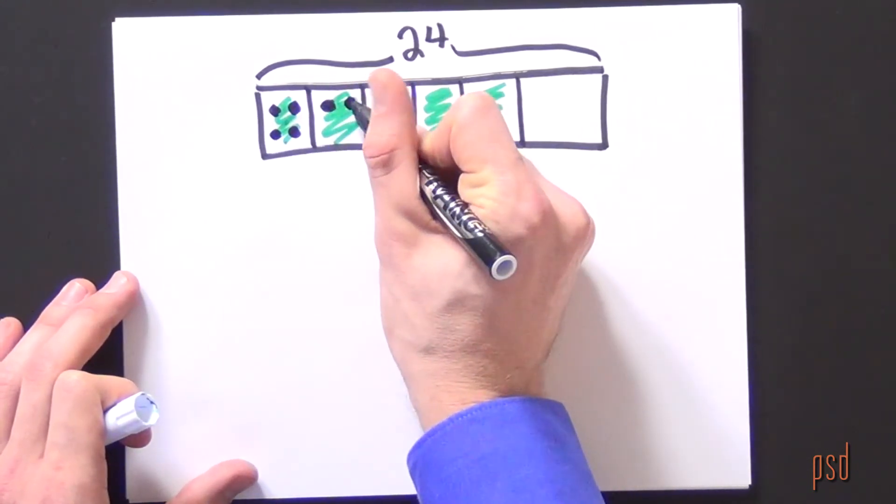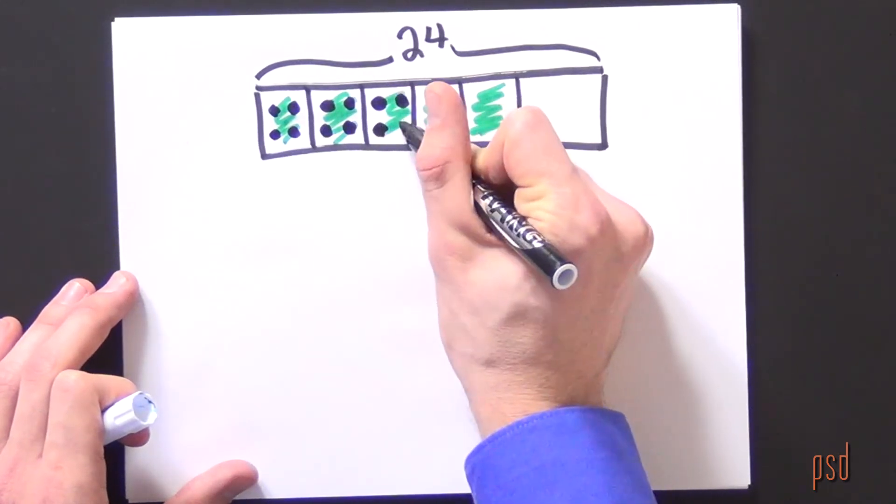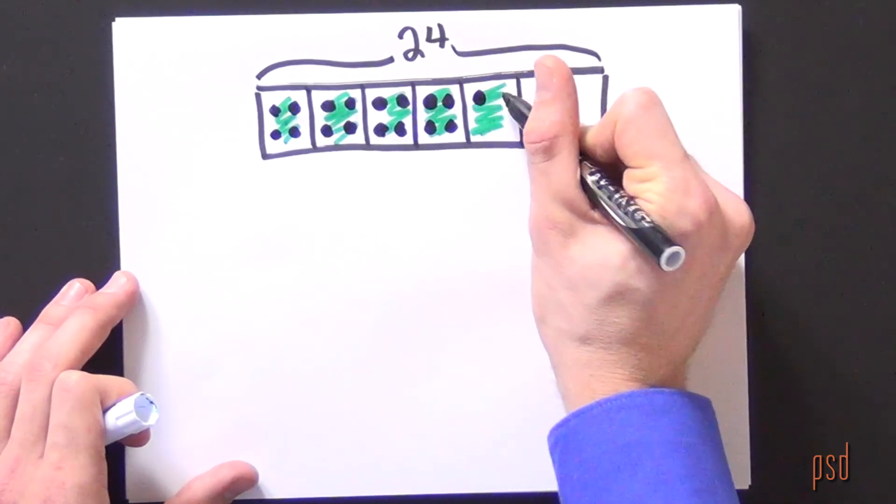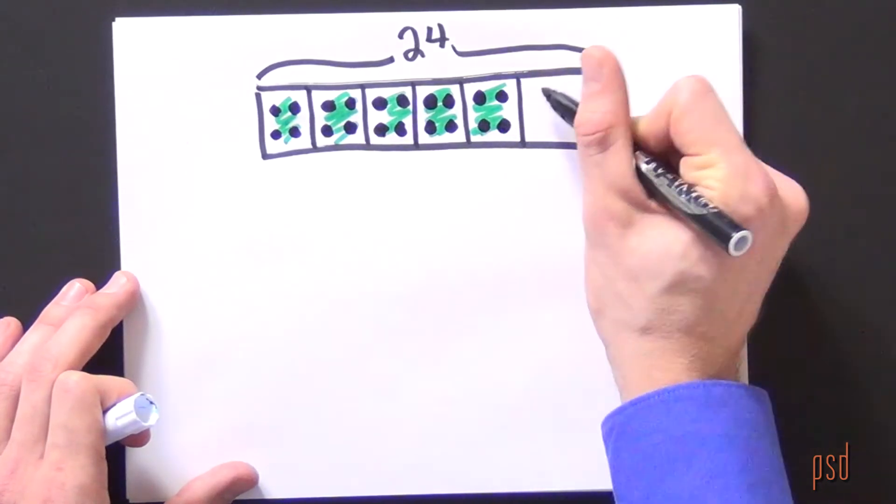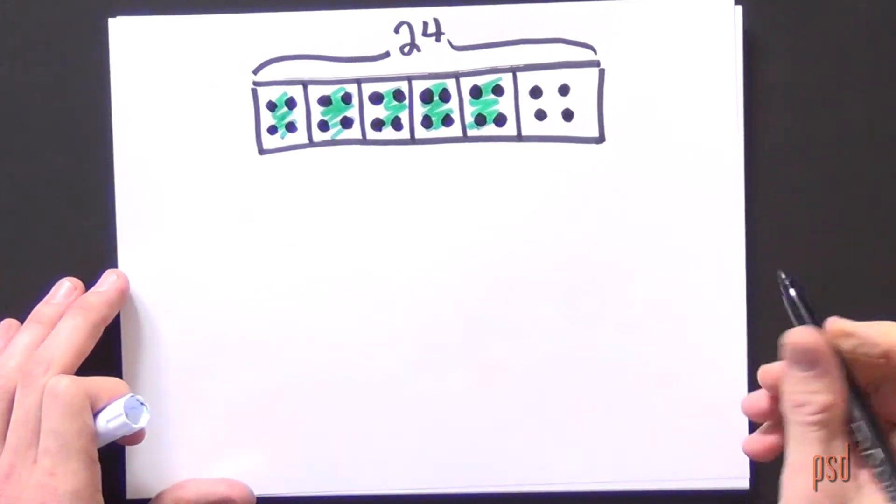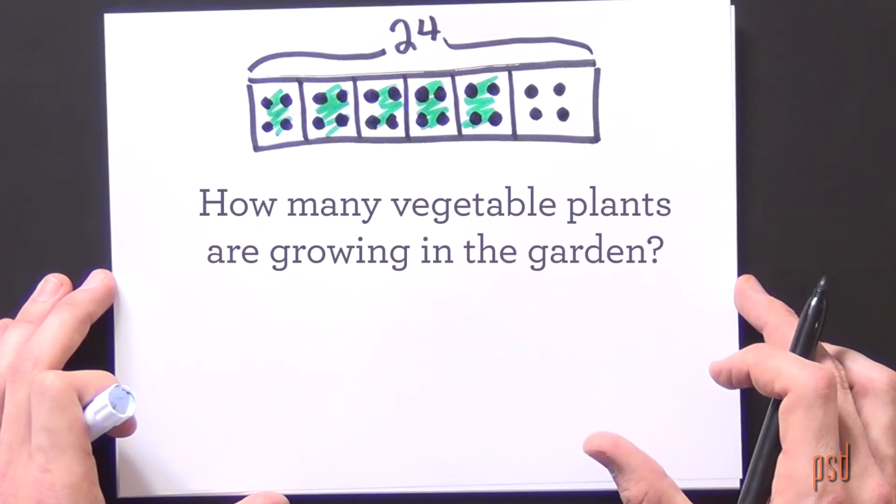So I'm going to represent 4 black dots. I hope you can see this in each part of my garden. Here I've represented all 24 plants. I've shown that the garden is broken into sixths and I've also shaded in five of those sixths.